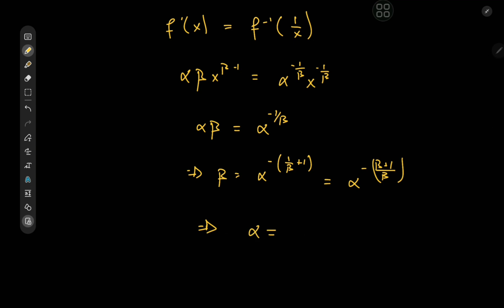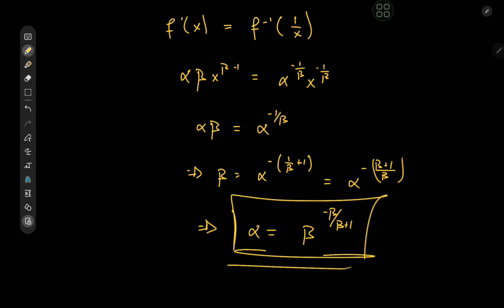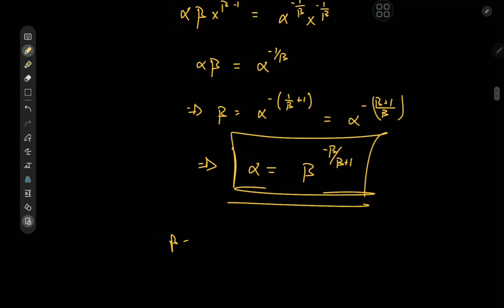We have α = β^(−β/(β+1)), which is pretty cool. Now for the information from the exponents: β − 1 = −1/β. Expanding gives β² − β = −1, which means β² − β + 1 = 0.